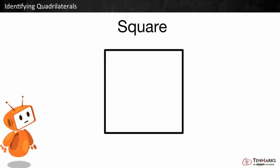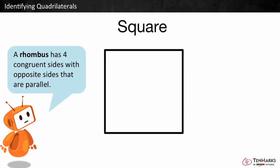This is a square. It's a special rhombus. It has four congruent sides with all sides that are the same length. All pairs of sides are perpendicular, meaning all four angles are right angles.